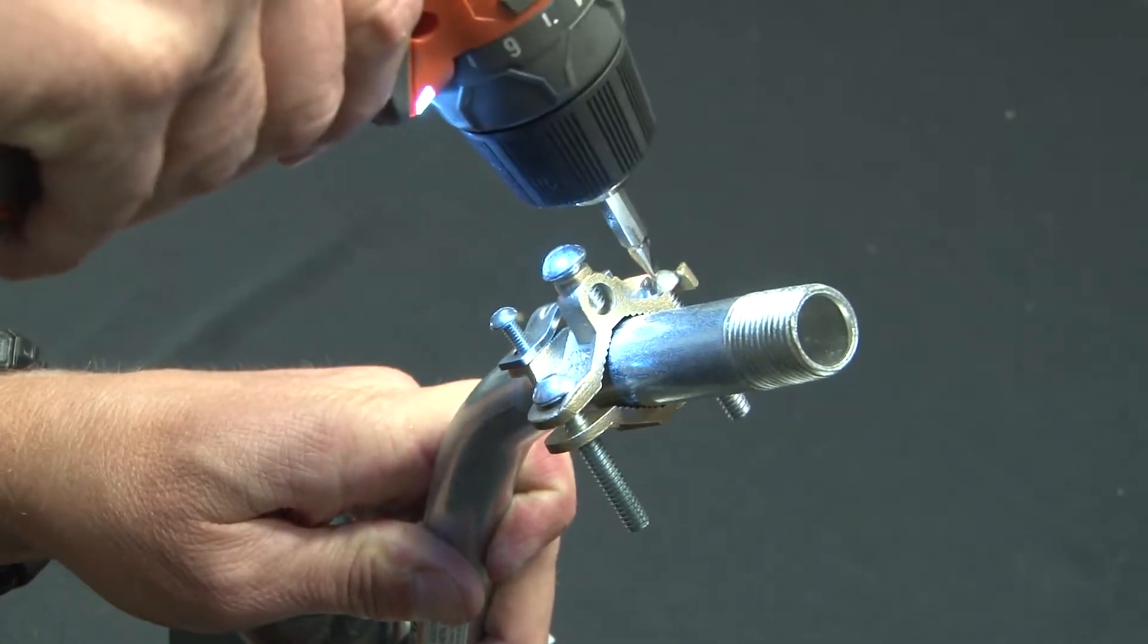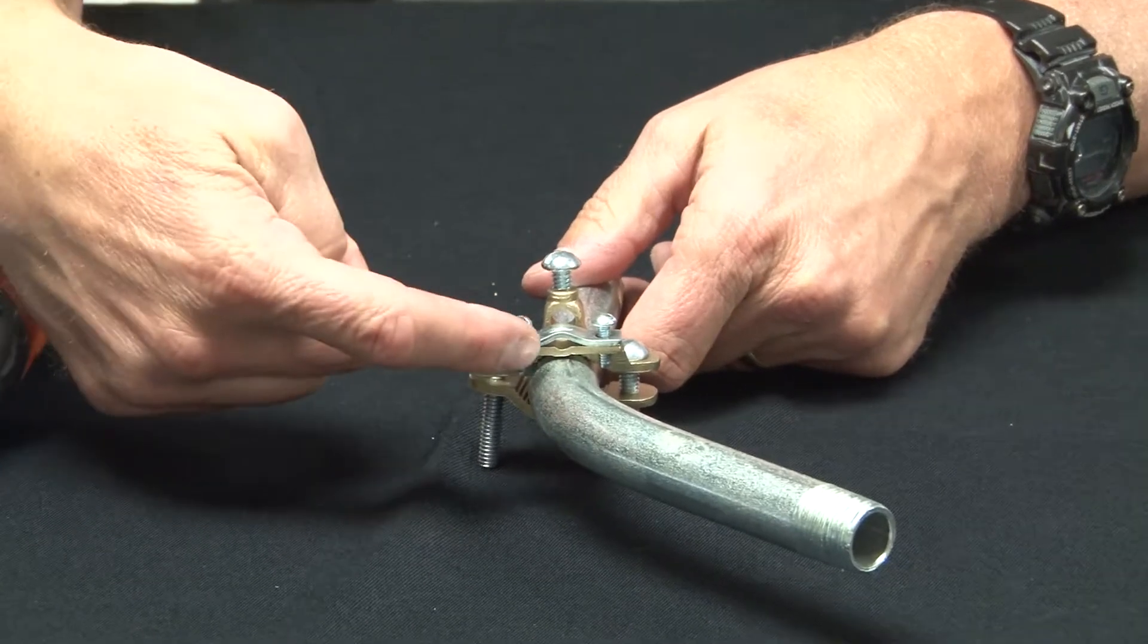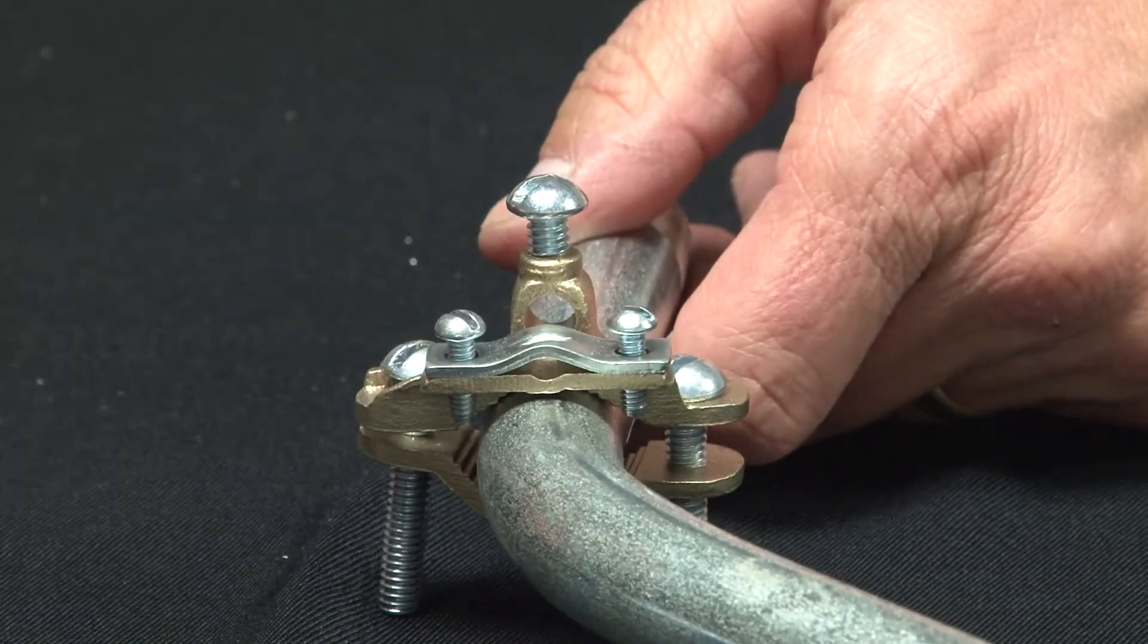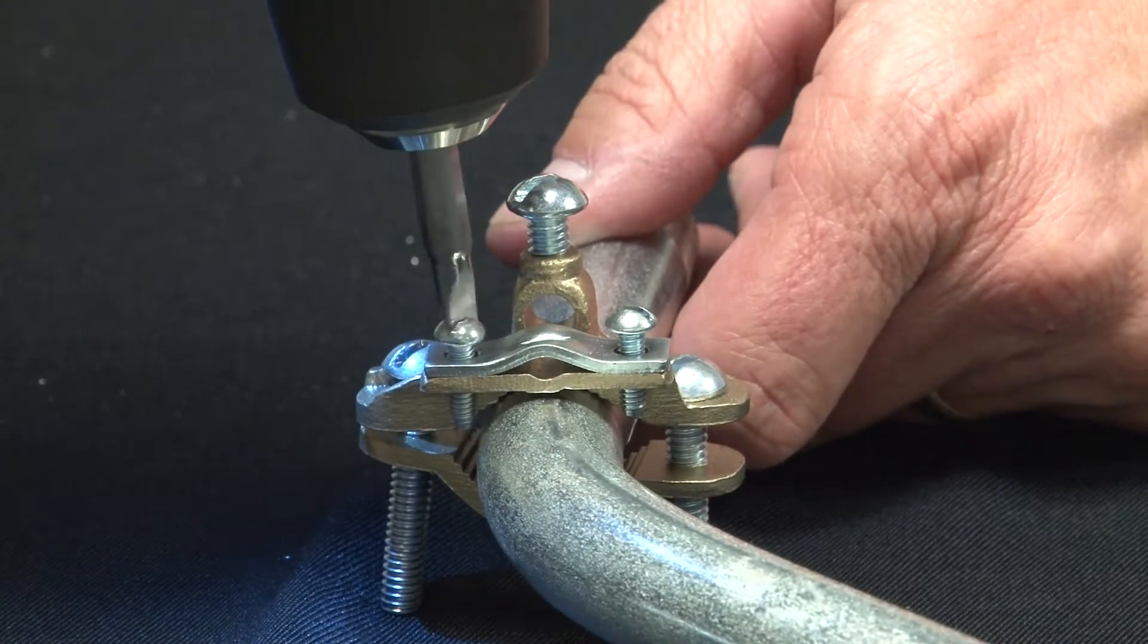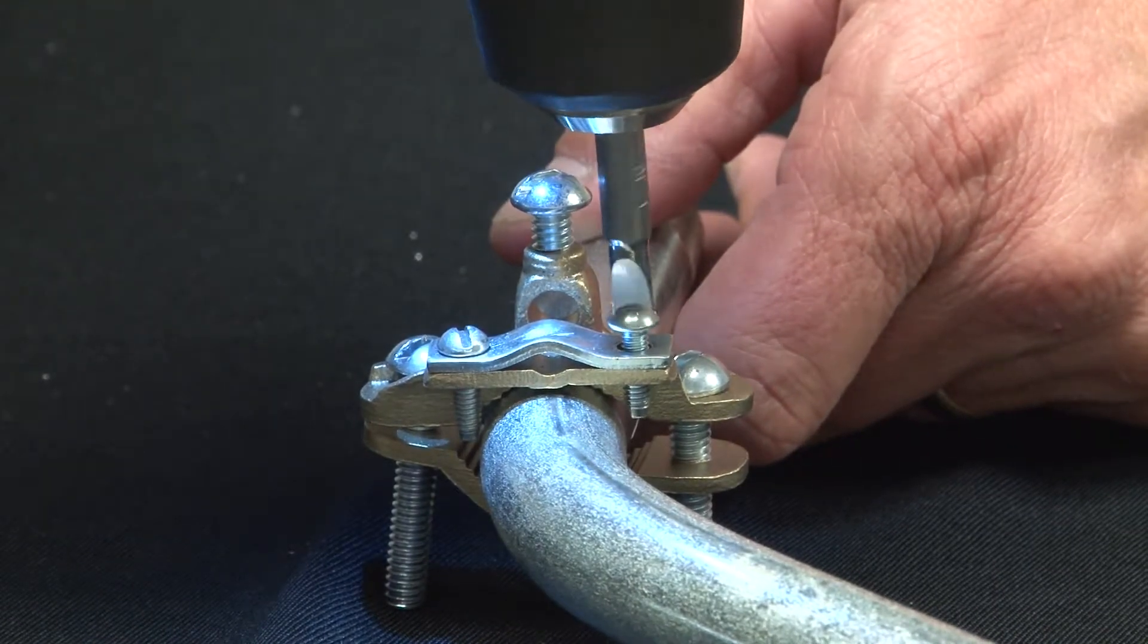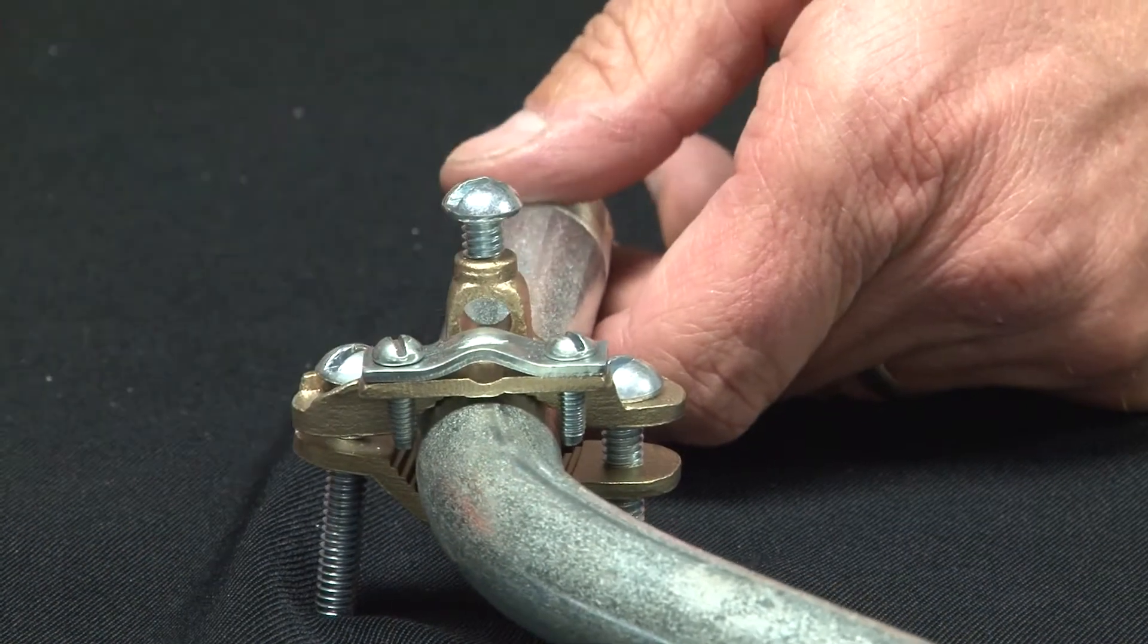Once you get a good solid bond, insert the armored ground cable, clamp that down, and then insert the ground wire through there.